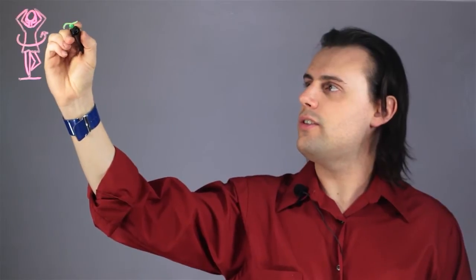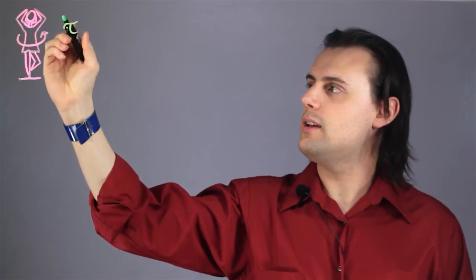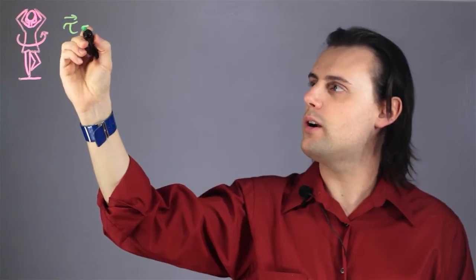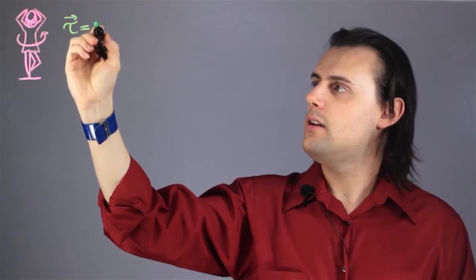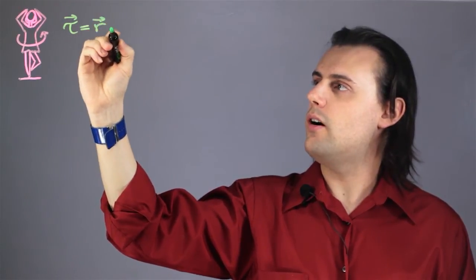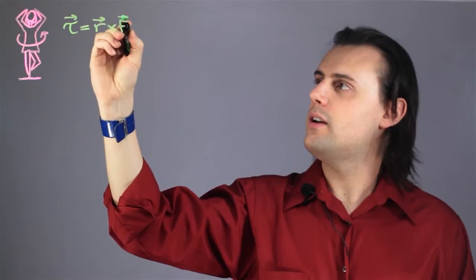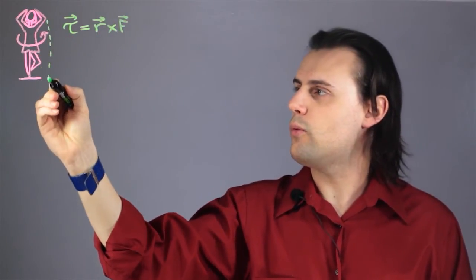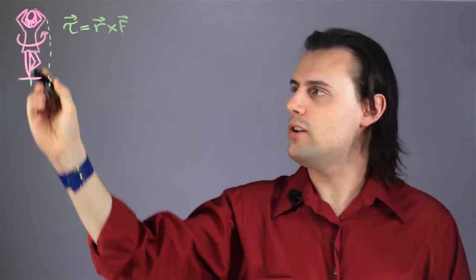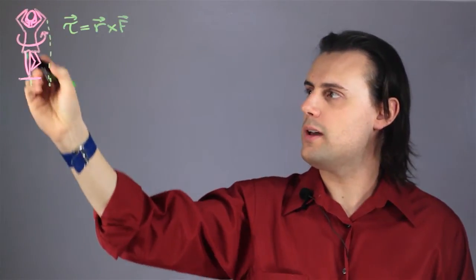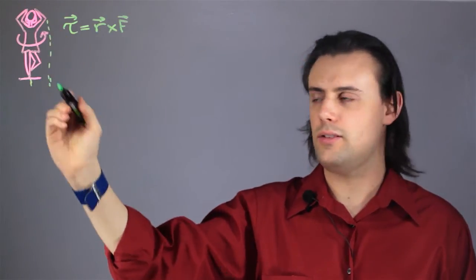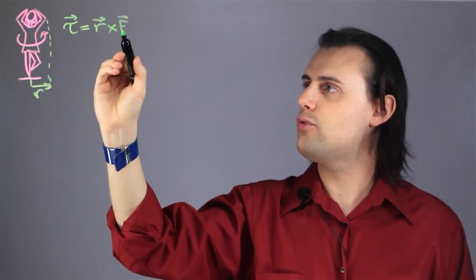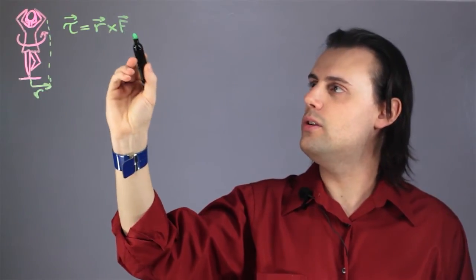The first thing we can do is write down the equation for the initial torque, which is equal to R cross F. Here R is the radius — as she spins, you can approximate her body as a cylinder — and F is the initial force that induces a torque causing her to spin.